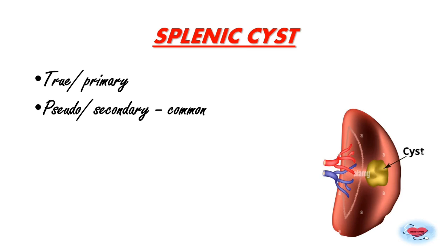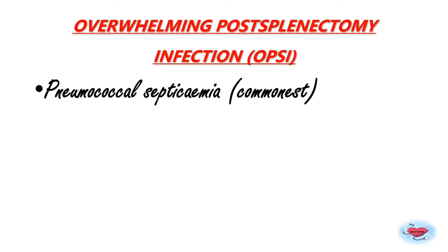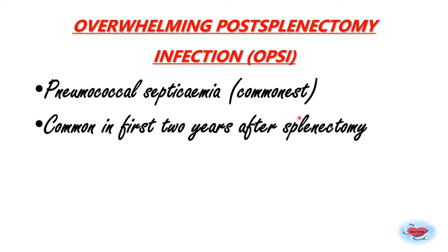OPSI — Overwhelming Post-Splenectomy Infection — occurs because after splenectomy patients have reduced IgM, reduced antibodies, and reduced phagocytosis, making them prone to infection. The commonest infection is pneumococcal septicemia. Other organisms include Neisseria meningitidis, H. influenzae, Babesia, etc. OPSI usually occurs within two years after splenectomy, though the risk can persist for a lifetime.